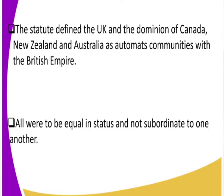The Statute also defined the UK and the dominions of Canada, New Zealand, Australia, and others as autonomous communities within the British Empire. All members of the Commonwealth were to be equal in status and not subordinate to one another. So all members of the Commonwealth are equal and none is subordinate to another.